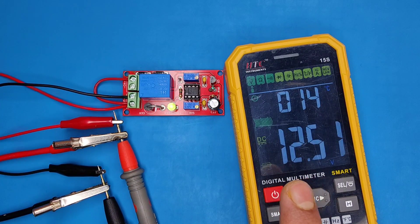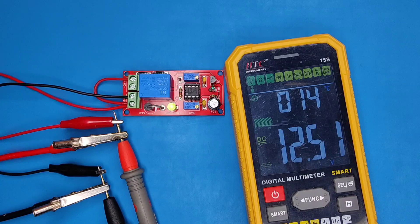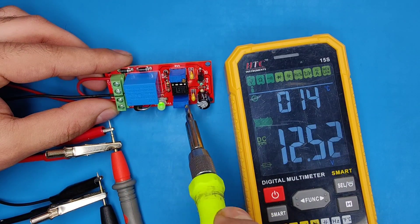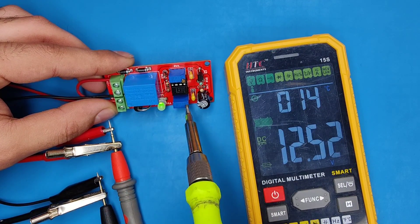I set 12.5 volts as trigger voltage where charging will restart. Adjust the potentiometer clockwise till red LED turns on.